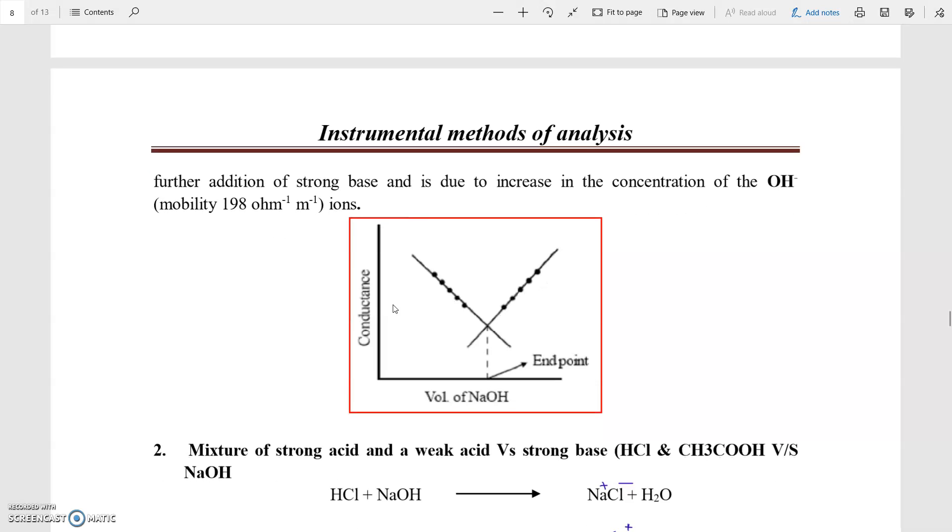It is shown in the graph. In the graph, initially, the conductivity decrease is observed due to the replacement of highly mobilized H plus ion with low mobilized Na plus ion. When all the H plus ions are completely neutralized, then at that point,